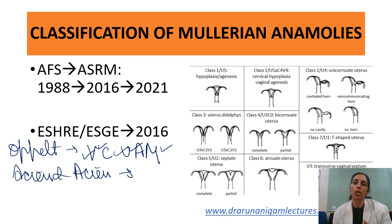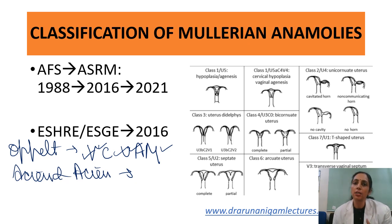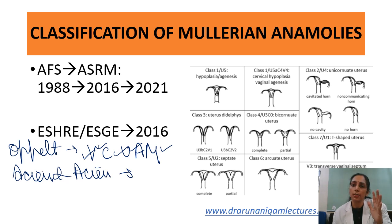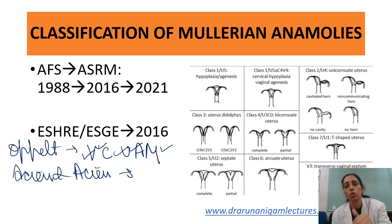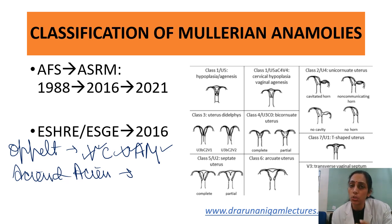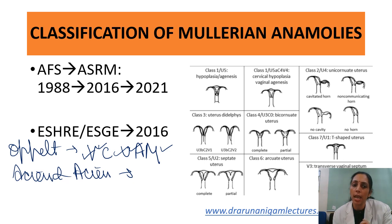Then ESHRE/ESGE gave a classification around 2014. This classification was slightly difficult: although it combined vaginal and uterine anomalies, the main classification was divided into six categories, each with sub-classifications, and anomalies had to be named U, V, and C with numeric codes — for example, if the cervix is not present it should be written as zero. It was quite difficult, and people were not using it in day-to-day practice, reverting back to the AFS classification. This 2016 ESHRE/ESGE classification was again not very widely accepted.